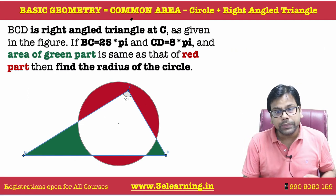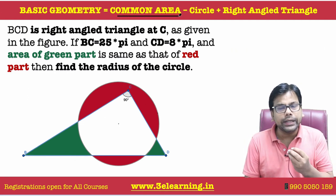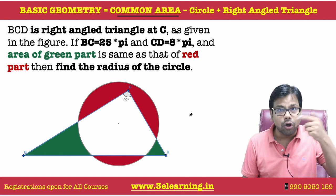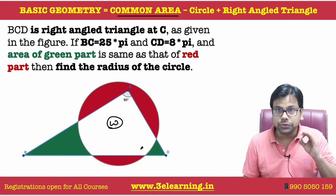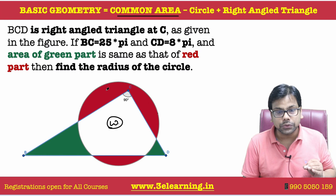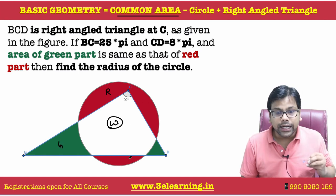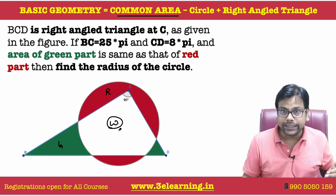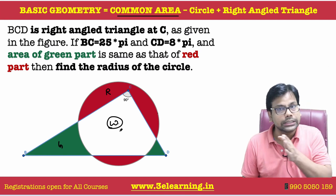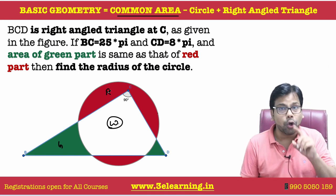So, the topic name is common area. Whenever you have a common area and the non-common part — say this part is white, this one is the red area, and this one is the green area — if you have a common part called the white, which is in the triangle as well as in the circle,